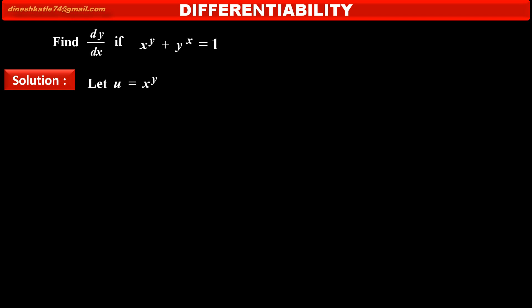Let u equal to x raised to y — the first term — and let v equal to y raised to x — the second term. Therefore, we can write our given equation as u plus v is equal to 1.